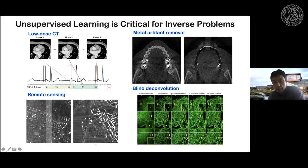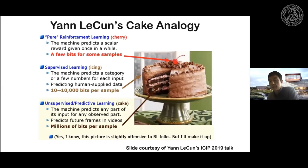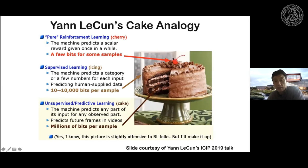Consider also bioimaging applications like blind image deconvolution. The measurement is a blurry image and the goal is to find the underlying high-resolution image, but the underlying image is unknown, so pair training is not possible. This kind of unsupervised learning setup is common in most machine learning problems. This slide is taken from Yann LeCun's ICIP plenary talk, where he compared machine learning to a cake: reinforcement learning is the cherry on top, supervised learning is the icing, but unsupervised learning is the whole body of the cake.